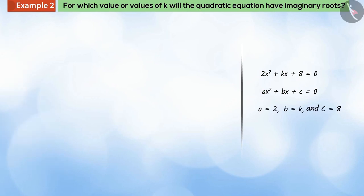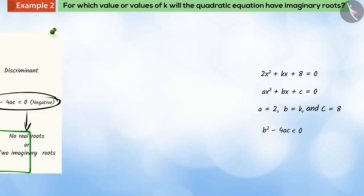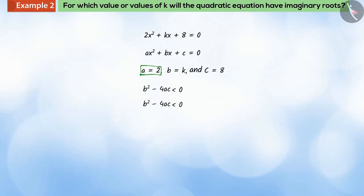We know that the roots of quadratic equation will be imaginary if the value of its discriminant is less than 0, that is, negative. If we substitute the values of A, B and C in this and solve, we get that k is greater than negative 8 and smaller than positive 8.